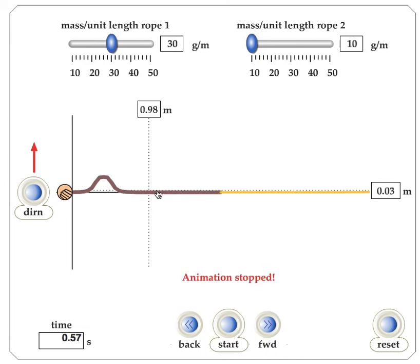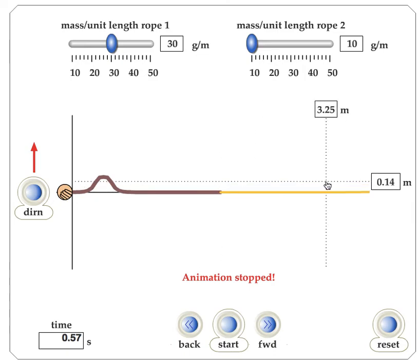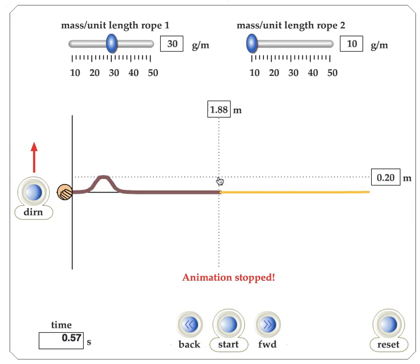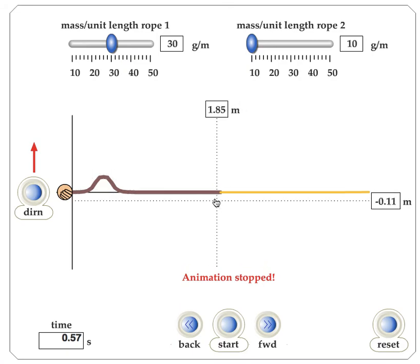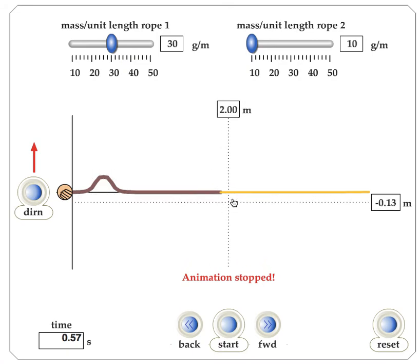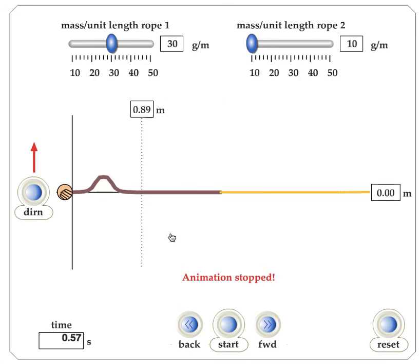Because it's hard to travel in the first medium, and then it's easy to travel in the second — this is acting more like a free end. Sometimes this is called a soft reflection, so it bounces back on the same side.